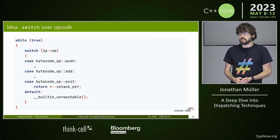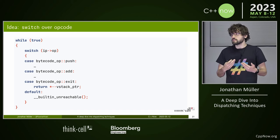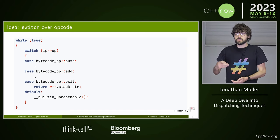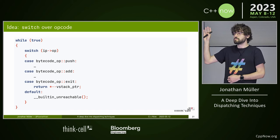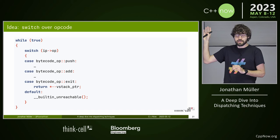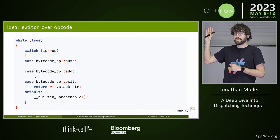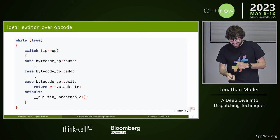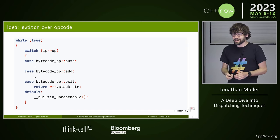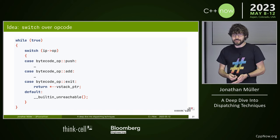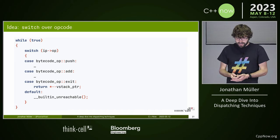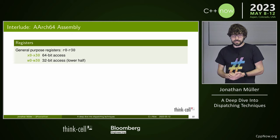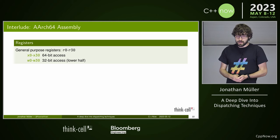To understand what the compiler is doing for the switch, we need to look at the generated assembly. Who here can roughly read assembly code? Almost everybody. And when you answered, who was thinking about ARM64 assembly code? Nobody. So let's quickly take an overview of ARM64 assembly, since that's the machine I'm running this on.